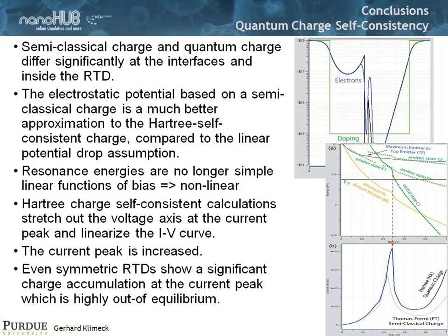The Hartree is a nice and insightful modification to the semi-classical charge — it stretches out the IV, makes it a little bit more linear, and makes the current a little bit higher. The subtle message is that even a symmetric RTD has significant charge accumulation at peak current, which is highly out of equilibrium.